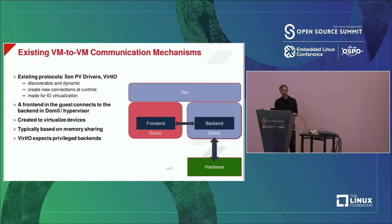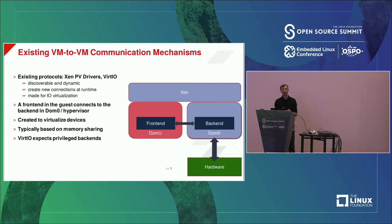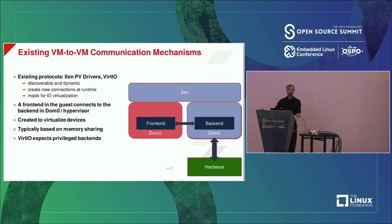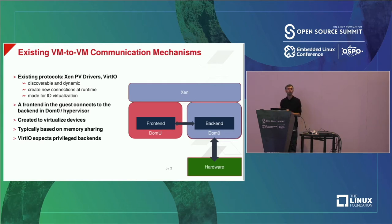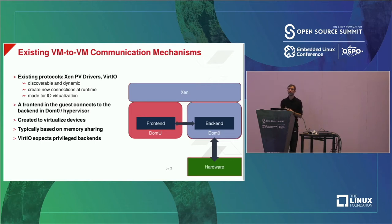A couple of interesting details: these protocols are typically based on memory sharing rather than memory copying. This is important because if you have any safety requirement, sometimes memory sharing is not allowed. Additionally, VirtIO today expects privileged backends, meaning the backend needs to be able to map any page the guest passes to it, which requires full privilege. This is another thing you might not have the ability to grant to the back-end if you have any safety requirement.